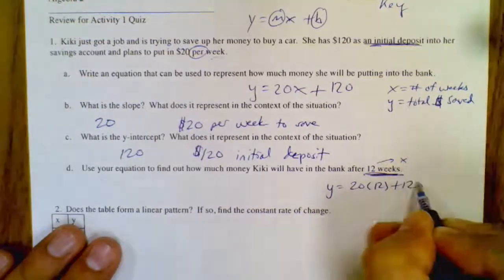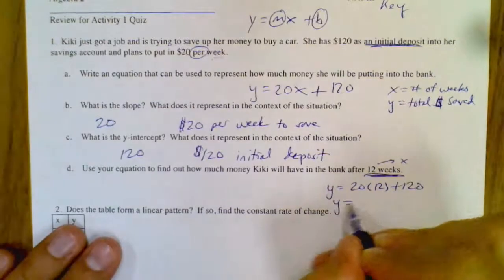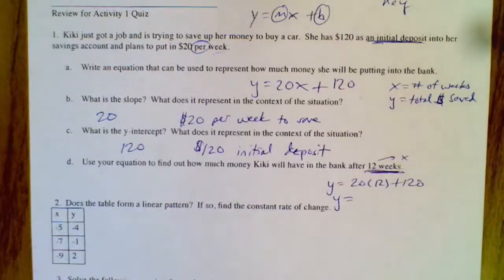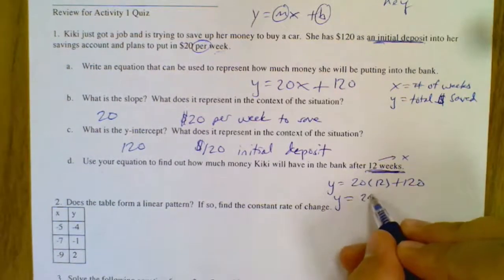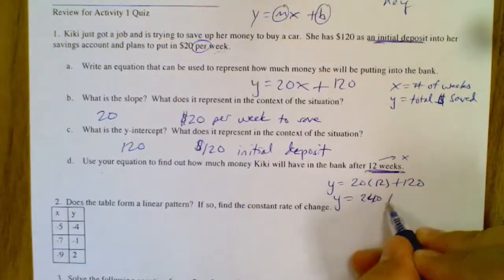And then 20 times 12 is going to be probably 240, right? Yep. So 240 plus 120 is 360.